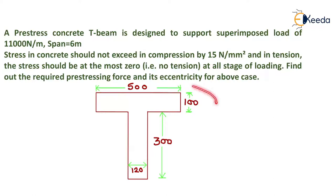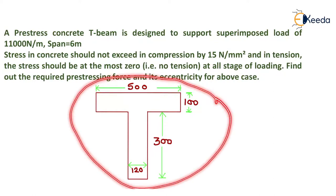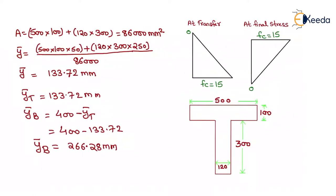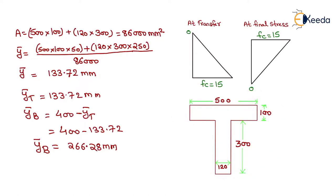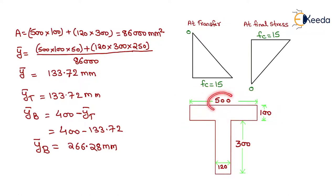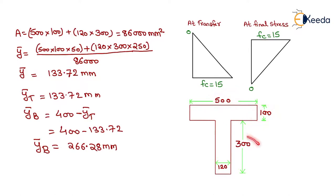We are given a diagram. First, we will calculate the area of the whole section. For the top flange, the area will be 500 × 100, and for the web, the area will be 120 × 300. So we get A equals 8,600 mm².